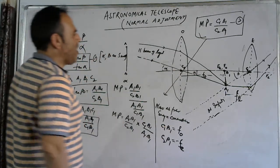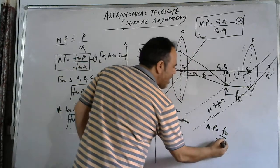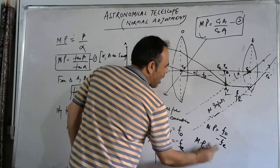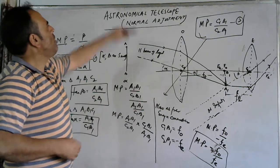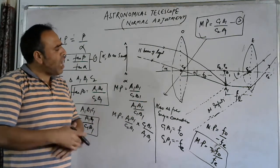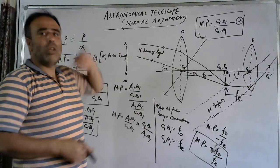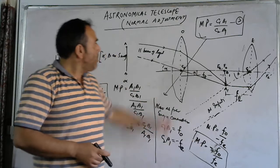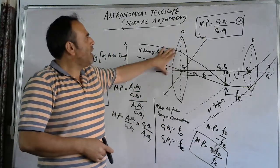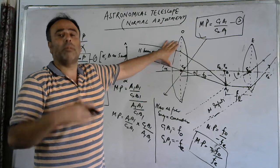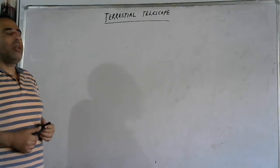Substituting the values of C1B1 and C2B1, we get magnifying power equals F0 divided by (minus Fe), which gives magnifying power equals minus F0 divided by Fe. This is the expression for the magnifying power of the astronomical telescope in its normal adjustment. The negative sign shows that the final image formed at infinity in normal adjustment is inverted with respect to the object. This magnifying power will be larger if the focal length of the objective is greater than the focal length of the eyepiece, which is why in the astronomical telescope we use an objective of larger focal length.